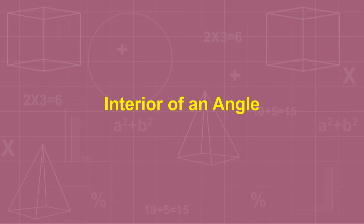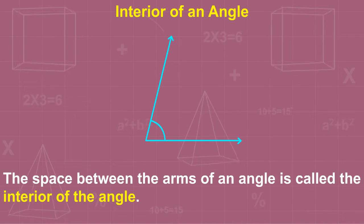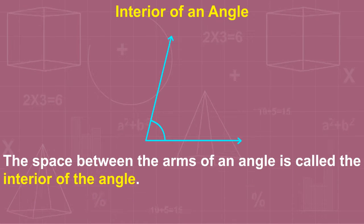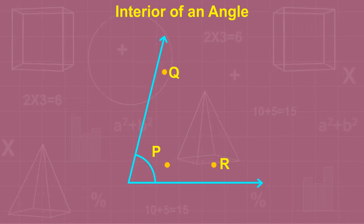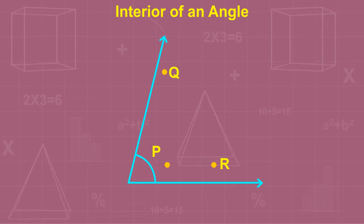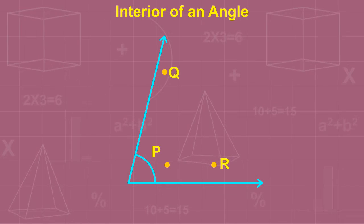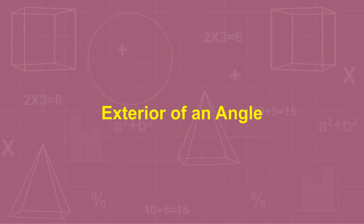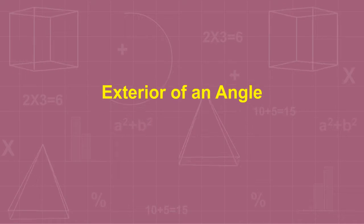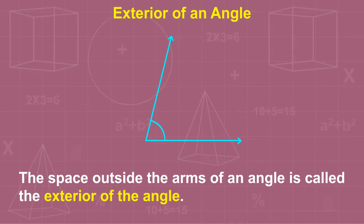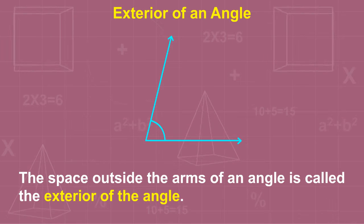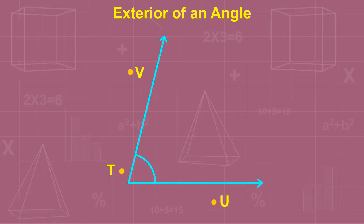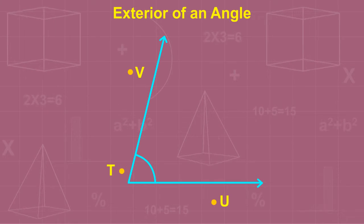The space between the arms of an angle is called the interior of the angle. In the given figure, we can see that points P, Q, and R lie in the interior of the angle. The space outside the arms of an angle is called the exterior of the angle. The points U, V, and T are the exterior points of the angle.